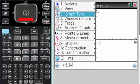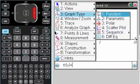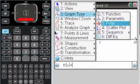If you press menu and look at graph type, which maybe you've never done before, we can do function, parametric, polar we'll talk about later, scatter plot, sequence, differential equations.